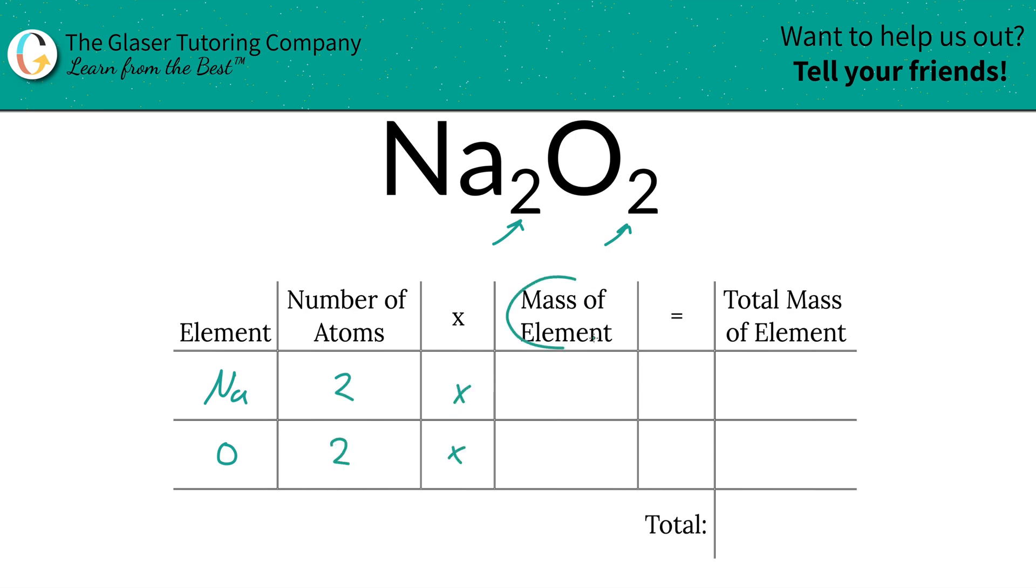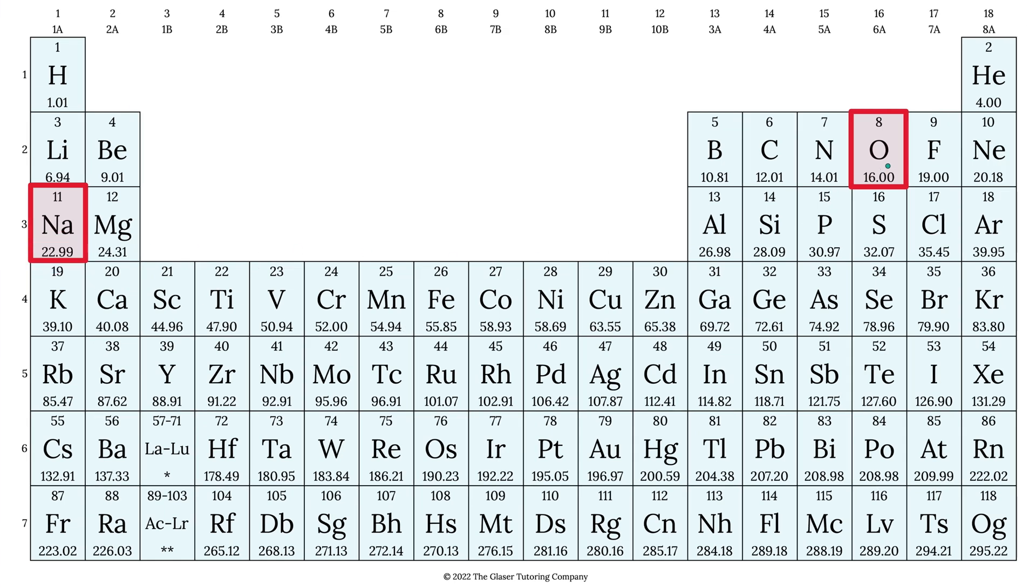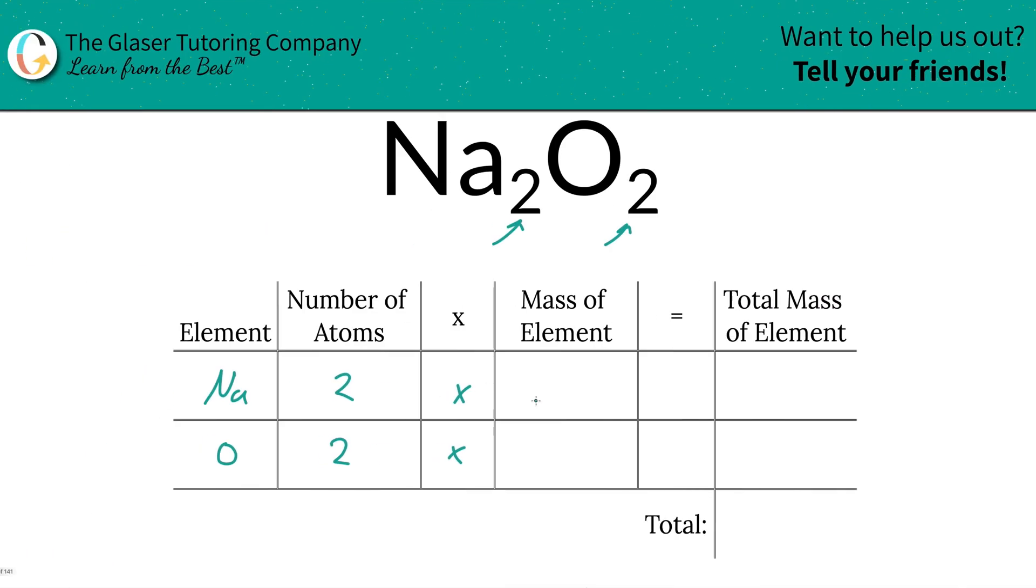Then we're going to multiply those number of atoms by the mass of each element. We have to refer to the periodic table for that. Sodium's mass is 22.99, oxygen is 16. We write that down: 22.99 for sodium, 16 for oxygen.